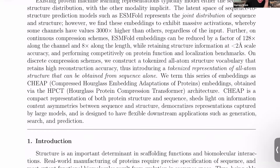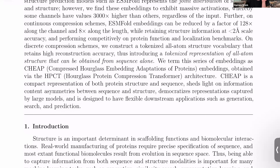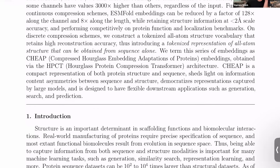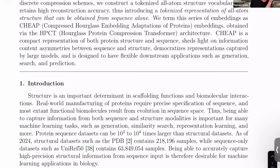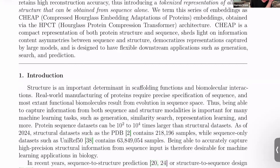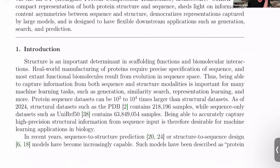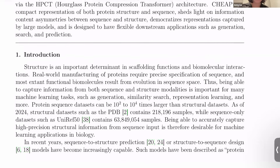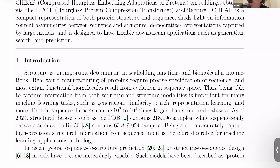The representation you're generating captures structure, but the input you give to the model is only a sequence — you're embedding a sequence into a space that captures both structure and sequence. That's the goal. You call these CHEAP embeddings and use the HPCT architecture. HPCT is the autoencoder architecture, and CHEAP is the series of embeddings derived from compression of the latent space — a compressed embedding of sequence and structure.